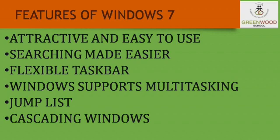Fourth, Windows supports multitasking. Windows 7 can effectively perform more than one task at a time. Fifth, jump list is a new feature that takes us straight to the documents, pictures, songs or websites you have recently visited. Last, cascading windows.